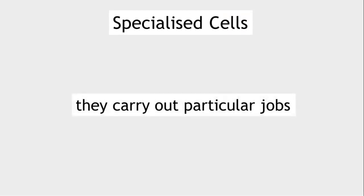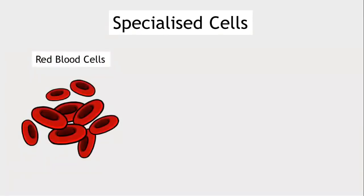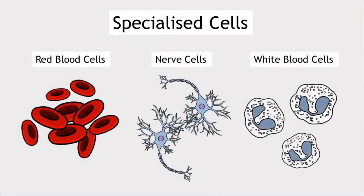Specialised cells. Some cells are specialised. They are able to carry out particular jobs. The specialised cells we will look at are red blood cells, nerve cells, and white blood cells.